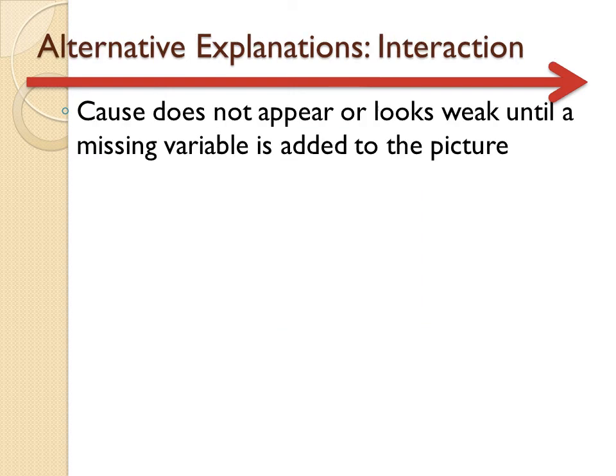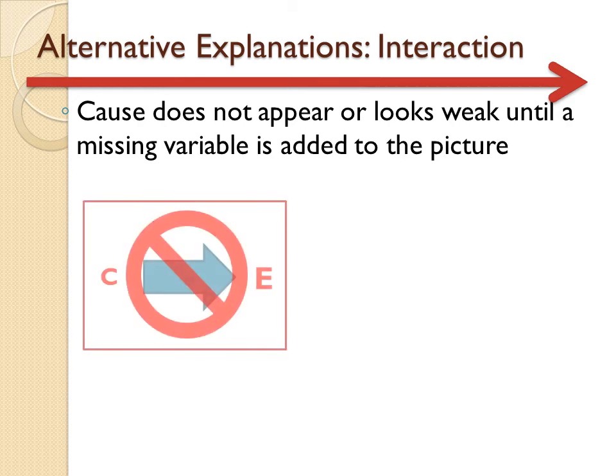The last alternative explanation is not for something that looks like a cause and effect relationship, but rather explains why a causal relationship exists when it doesn't look like it exists at first. Sometimes correlations are very weak or seem not to exist at all — we have a cause that occurs before an effect, but the correlation study shows changes in the cause don't create clear, reliable changes in the effect. Well, if you add a third factor you weren't considering originally, suddenly a correlation will appear and a stronger case for cause and effect will emerge.